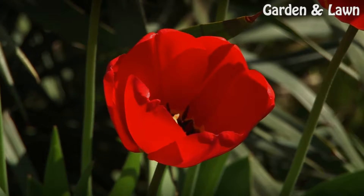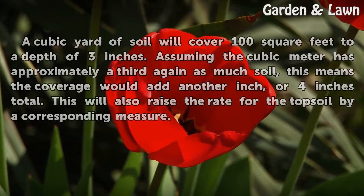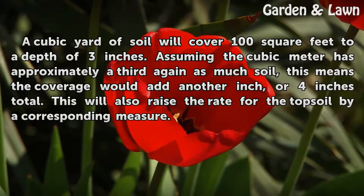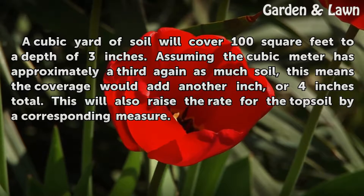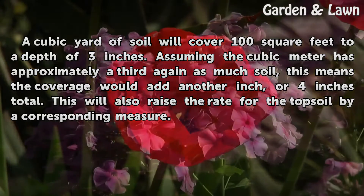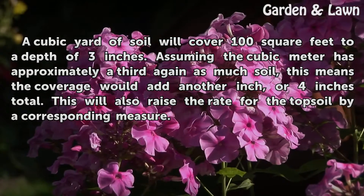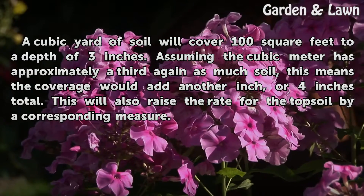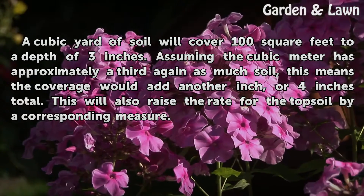Coverage: A cubic yard of soil will cover 100 square feet to a depth of 3 inches. Assuming the cubic meter has approximately a third again as much soil, the coverage would add another inch, for 4 inches total. This will also raise the rate for the topsoil by a corresponding measure.